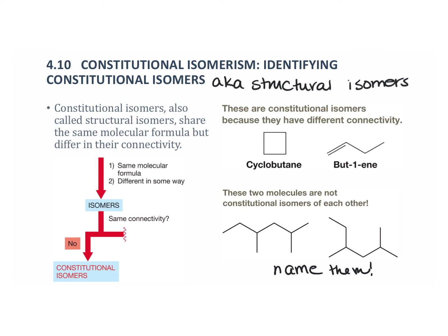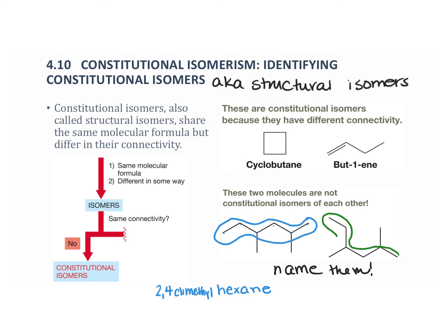When we look at this and name it, the longest carbon chain — circled here — is 1, 2, 3, 4, 5, 6, so that's hexane. Then 1, 2, 3, 4 — that's 2,4-dimethylhexane. Coming over to this other structure, the longest chain is again 1, 2, 3, 4, 5, 6, and the substituents are again at 1, 2, 3, 4 — so again it's 2,4-dimethylhexane. Same name means same molecule; those are not constitutional isomers.